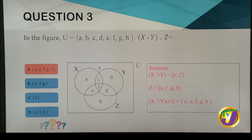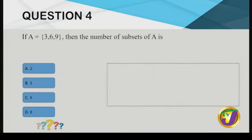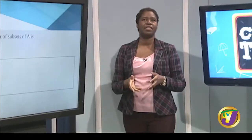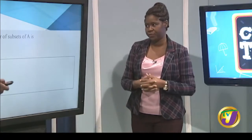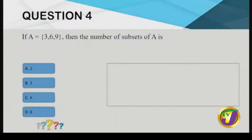Important point: when combining sets, do not repeat elements — each element is written only once. Sets question four: set A = {3, 6, 9}. How many subsets does A have? Starting to list them: single-element subsets are {3}, {6}, {9} — that's three. Two-element subsets: {3,6}, {6,9}, {3,9} — three more, making six. But option A (3 subsets) and B are already out.